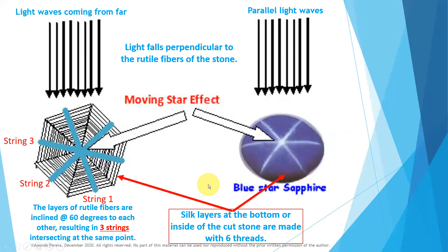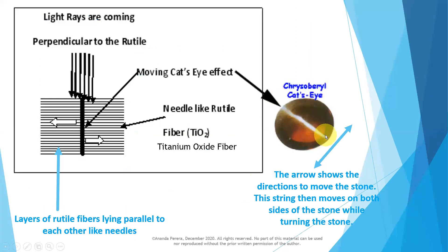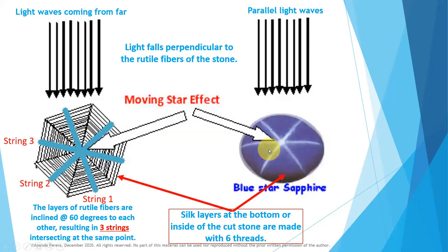It is different. It is the star effect. See, there are 3 lines, one over the other, crossing at this point. There are 3 lines — earlier we saw only one line. To create one line, we need one rutile layer, a parallel rutile layer. So to create 3 lines, we need 3 layers.